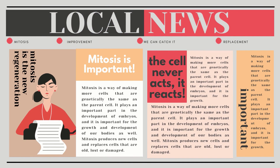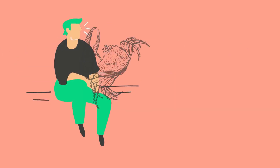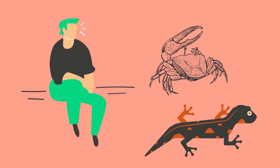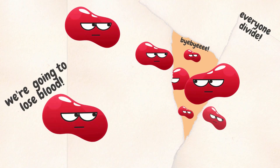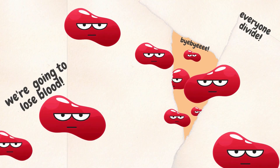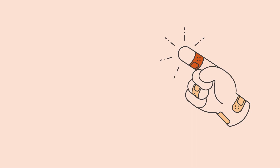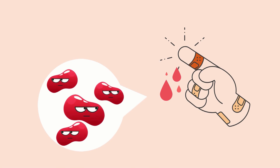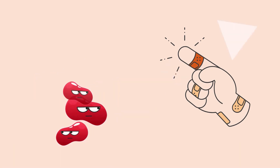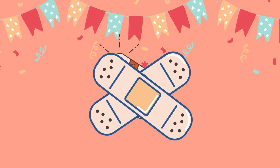Mitosis is also important because it is used in the replacement and regeneration of cells. This is the reason why mitosis is significant for the lives of several organisms such as humans, newts, and crustaceans. For the human body, mitosis is integral for our automatic regeneration — our ability to heal wounds and scratches. All of these immediate recoveries are made by replacing damaged body cells with brand new cells in order to remove the injury and bring the affected body part back to its normal state.